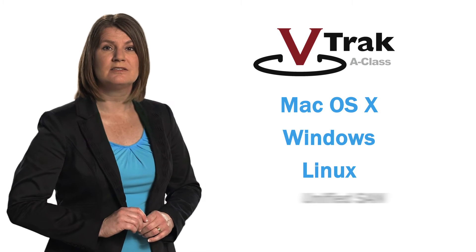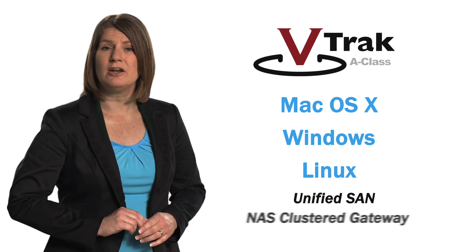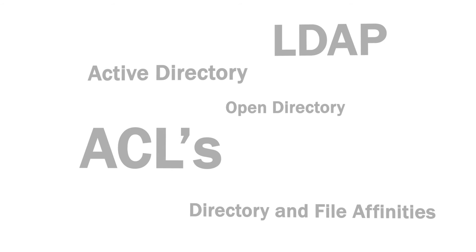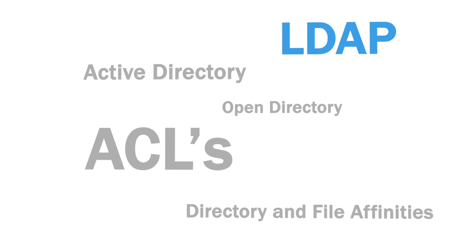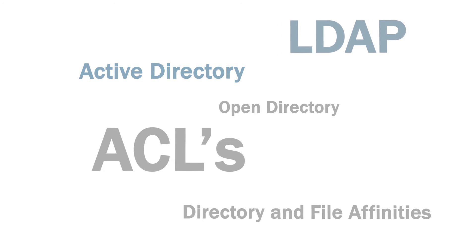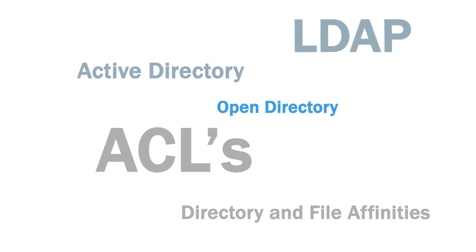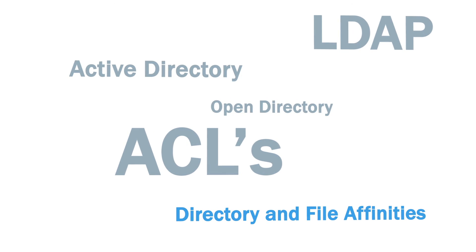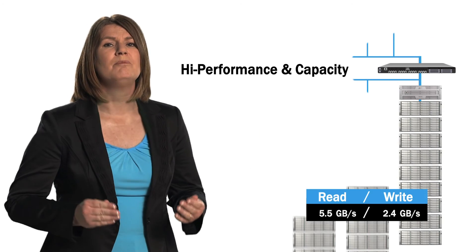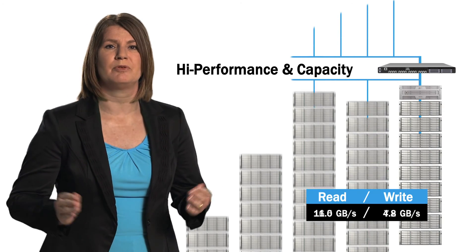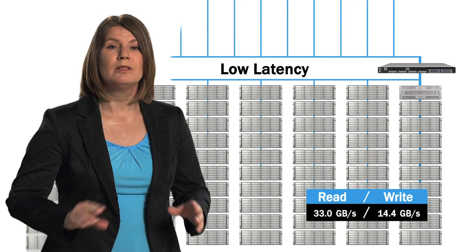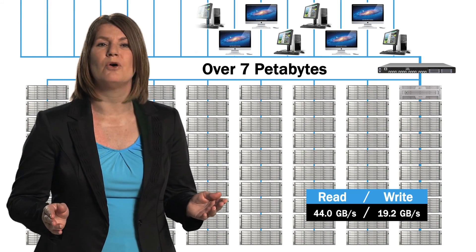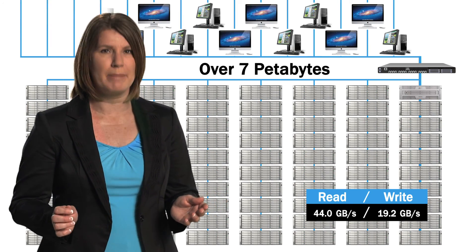VTrack A-Class supports Mac OS X, Windows, and Linux with unified SAN and optional NAS clustered gateway. VTrack A-Class includes LDAP, Active Directory, Open Directory, ECOSupport, Directory and File Affinities. Unprecedented performance and capacity with low latency over a shared SAN, scalable to over 7 petabytes.